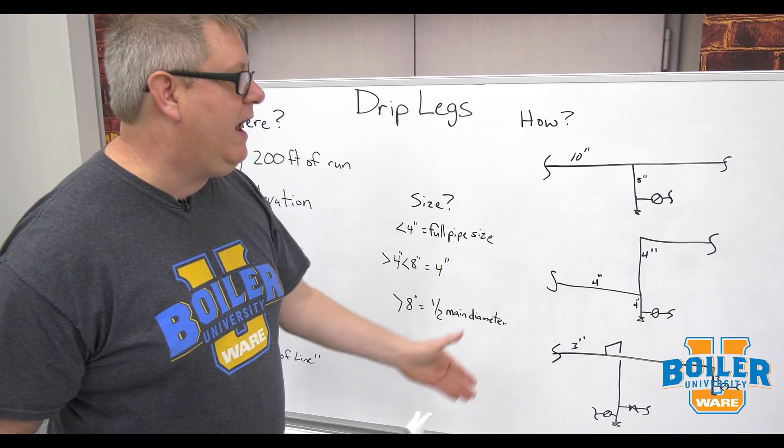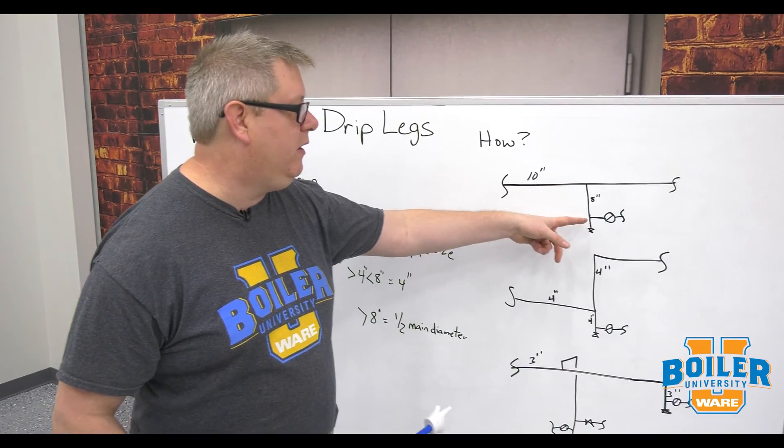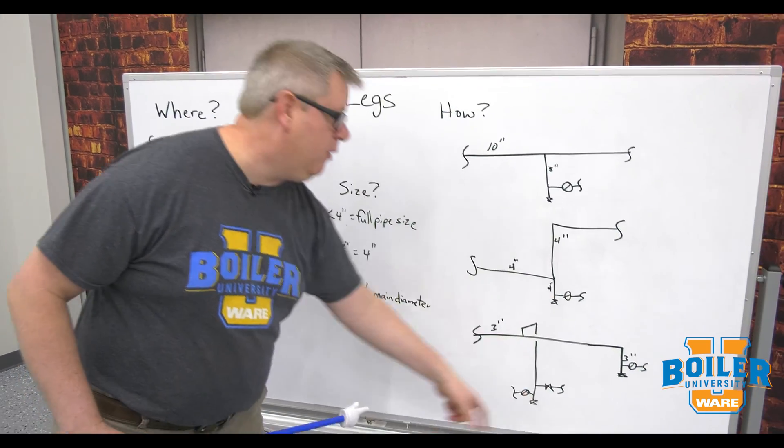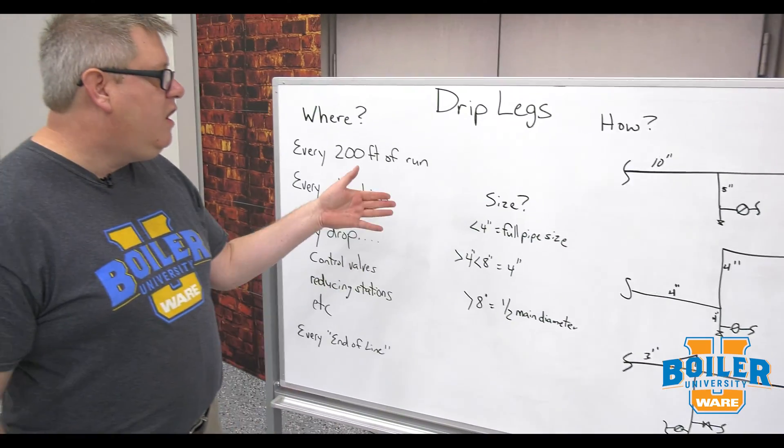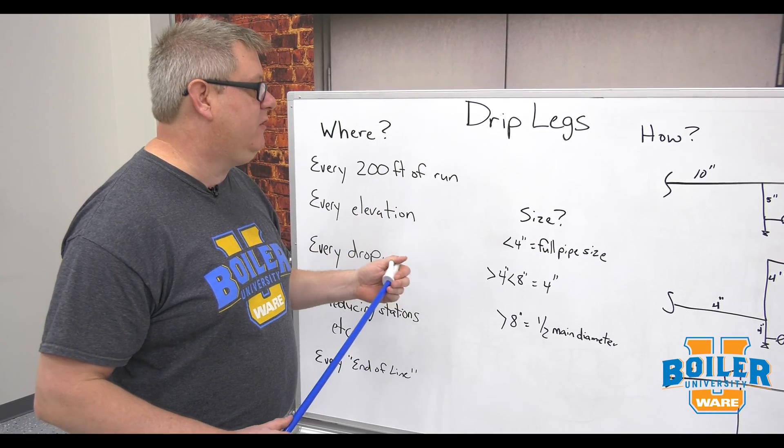So those are different examples of how we would pipe those drip legs. We've got a drip leg component and we've got a trap component. The size for drip legs, we've got a pretty simple chart here. It makes it simple.